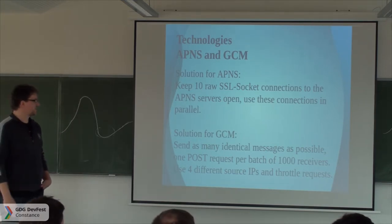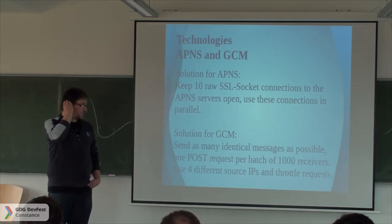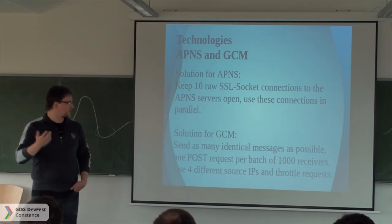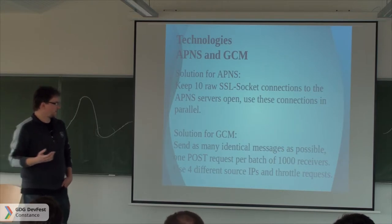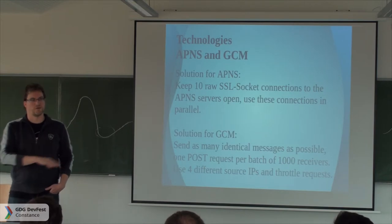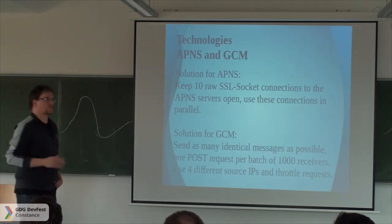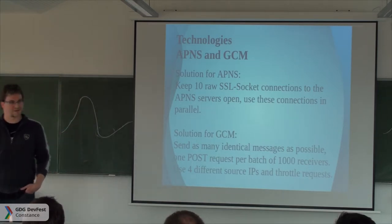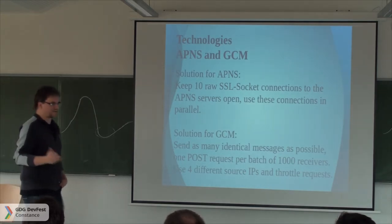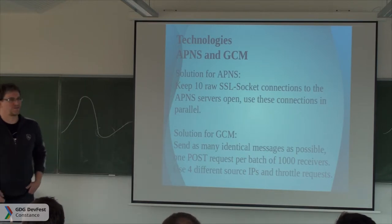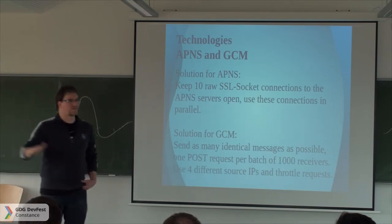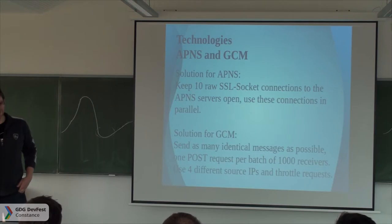For GCM we need a different approach, because at least for the last version it was one POST request per batch of 1,000 receivers. The Google servers do not respond very well to massive load — they shut down and send error messages, not even the expected ones, just internal server errors with no further information. So you have to throttle your requests and use different source IPs so that the Google servers don't shut down before you've sent everything.